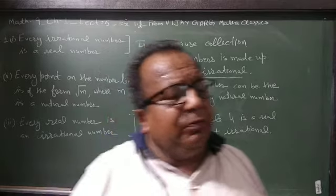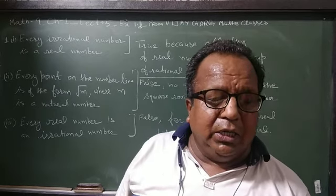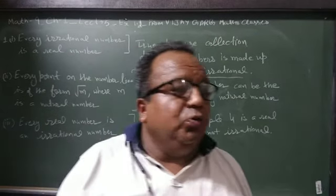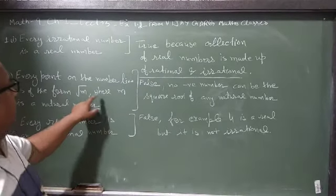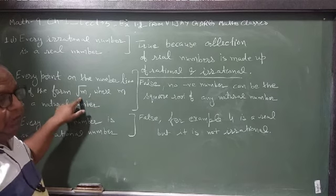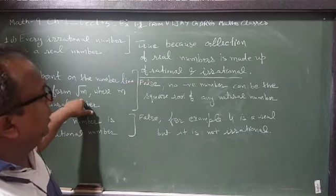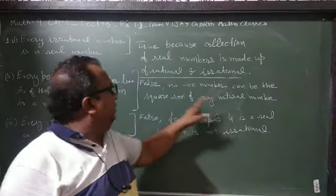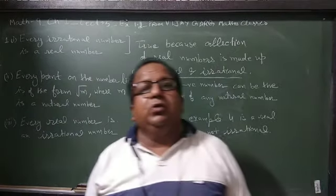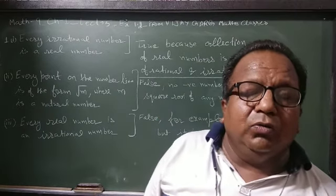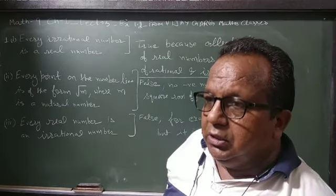Can every point on the number line be the square root of any natural number? This is why this point is false.